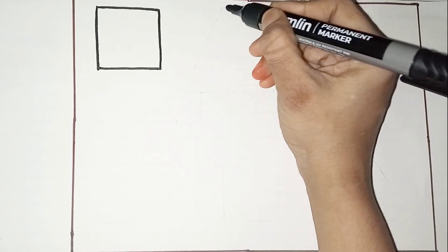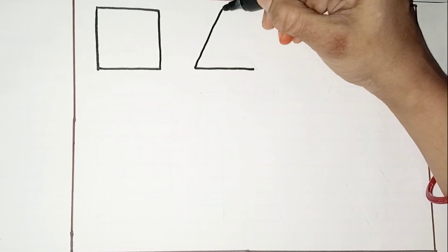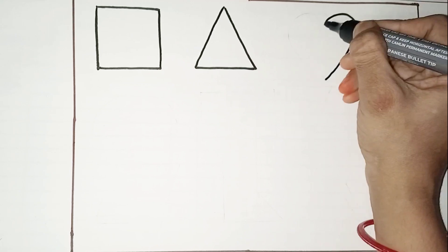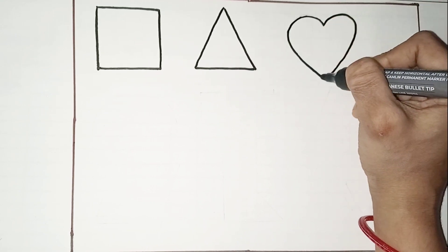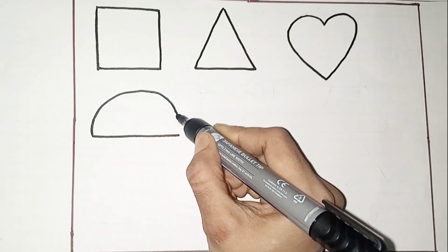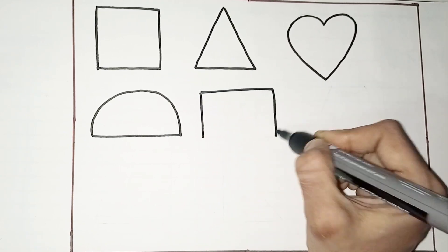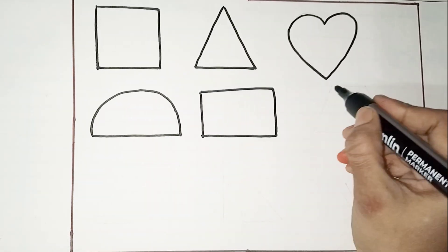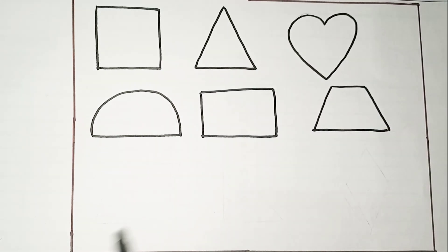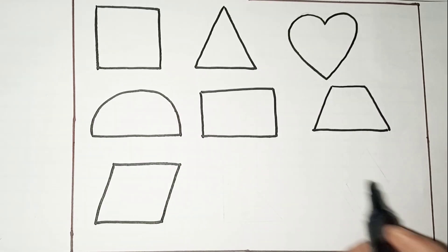Square shape. Triangle shape. Heart shape. Semicircle. Rectangle. Trapezoid.